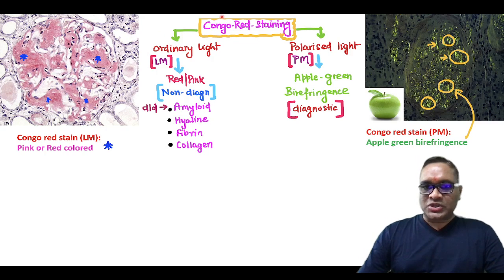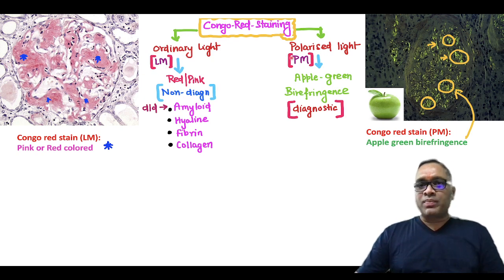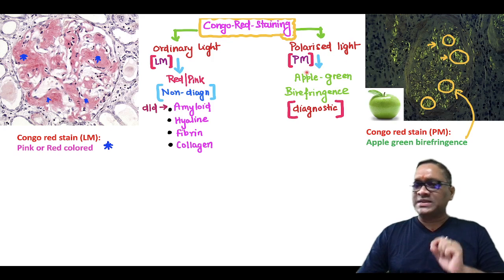Hello everyone, in this high-yield shot I'm going to tell you about Congo red staining where you can use two kinds of microscopy: ordinary light microscopy and polarized light microscopy.